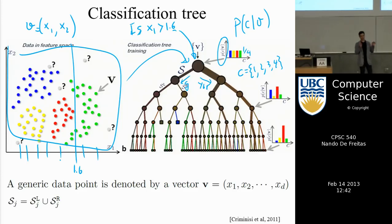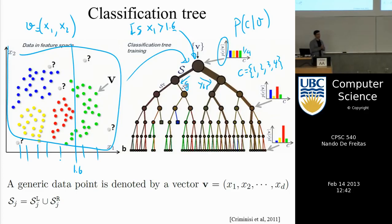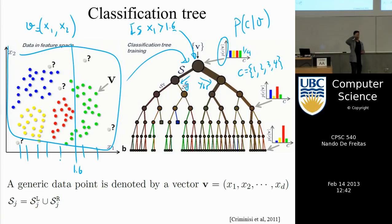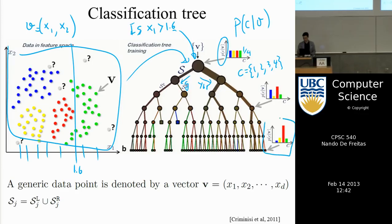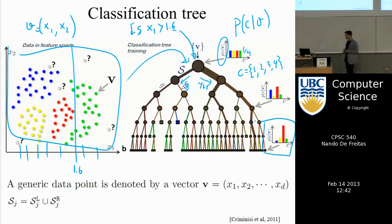The node checks if the first coordinate is greater than 1.6, then we do the same for the second coordinate. When you construct the trees this way, you get a separation of classes as you go down to the leaves. When a new point comes in, it follows simple tests: is the first coordinate greater than 1.6? Is the second coordinate less than 0.2? And so on. As it trickles down the tree it ends up in a leaf, and the class probabilities for that point are just the distribution at that leaf. If most training points that ended up there were red, then most likely that point is red.